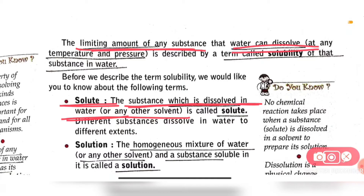The substance which dissolves in water or any other substance is called the solute. And the water or any other substance in which the solute dissolves is called the solvent. So a solution is made up of two parts: one is solute and the other is solvent.